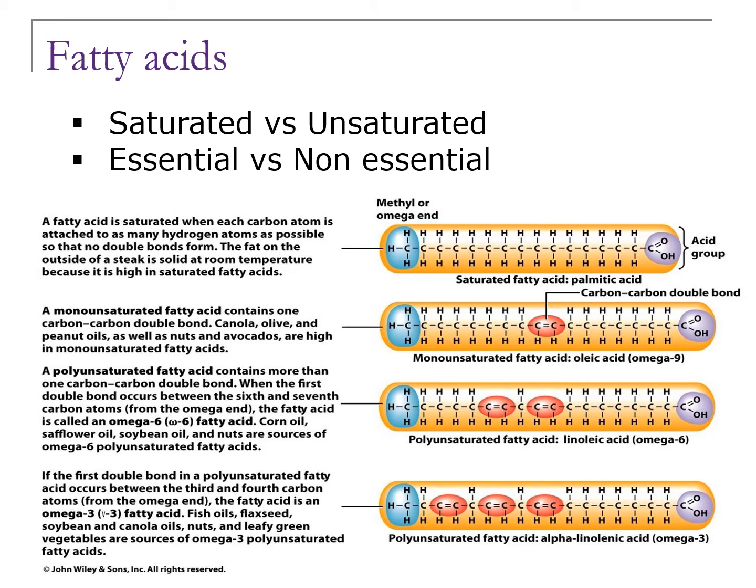Examples of saturated fat include butter, meats, and margarine. Unsaturated fats, however, are those that are not completely saturated with hydrogens. Unsaturated fatty acids tend to be liquid at room temperature, so these would include your oils. This is due to the carbon-to-carbon double bonds that are present in the unsaturated fatty acids. The number of carbon-to-carbon double bonds further classifies the fatty acid as either monounsaturated or polyunsaturated.